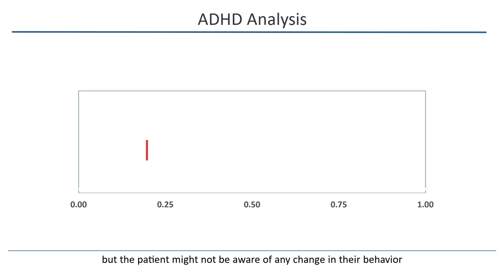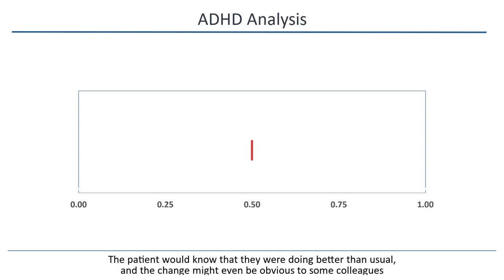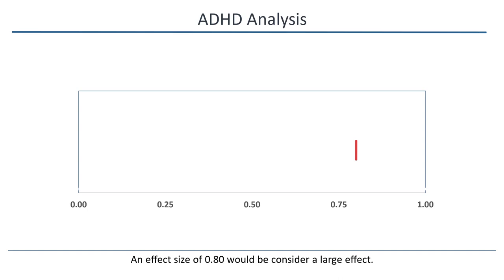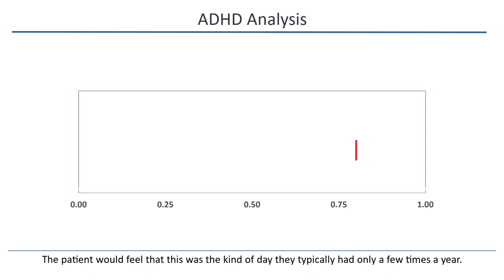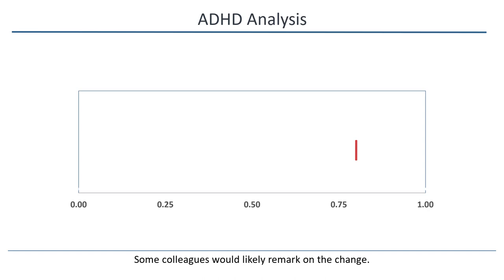An effect size of 0.50 would be considered a moderate effect. The patient would know that they were doing better than usual, and the change might even be obvious to some colleagues. An effect size of 0.80 would be considered a large effect. The patient would feel that this was the kind of day they typically had only a few times a year, and some colleagues would likely remark on the change. As a shorthand, I'll call these effects small, moderate, and large.